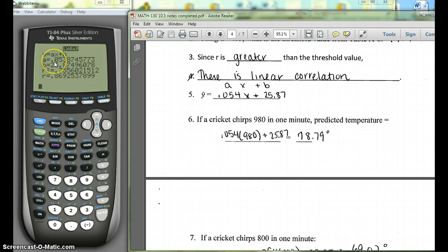So we'll round to a couple decimal places. Here we'd round that a to 0.054. That's our slope times x, plus, and then our y-intercept, the b comes from the b here, 25.87.